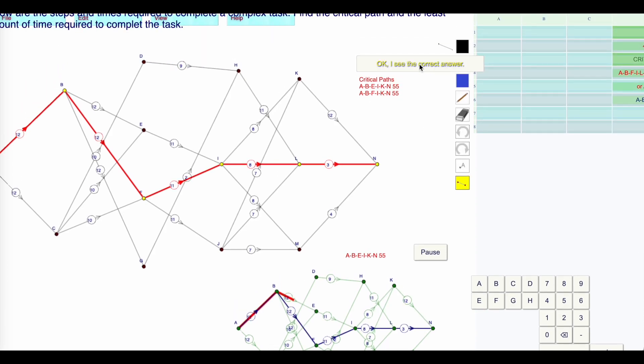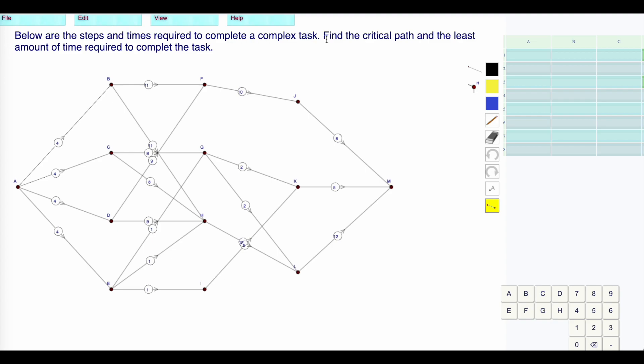Let's try another one. Below are the steps required in time to complete a complex task. Do I need to move any of these nodes around? I'm just going to move these nodes around a little tiny bit. I'm going to start with the four. I can see I have 11s up here. This 11 leads to a 12, which leads to another 12. That looks like my critical path.